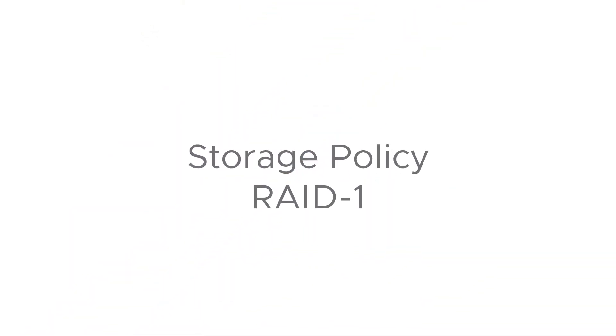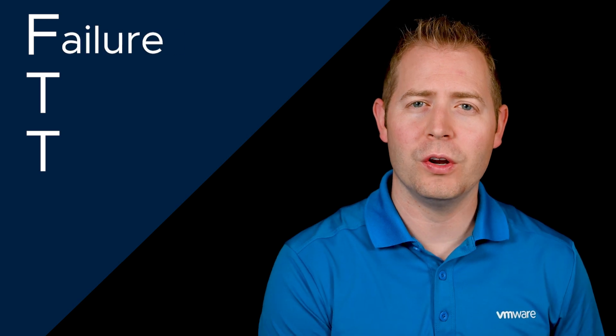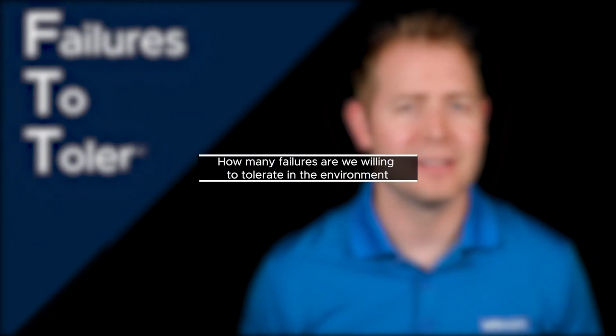Let's talk about our most commonly used storage policy, which is our RAID 1 policy. Our RAID 1 policy can support anywhere from one failure all the way up to three failures in the environment. We abbreviate that as FTT — our failures to tolerate. How many failures are we willing to tolerate? As we start increasing our FTT, there are hardware considerations and storage considerations that come along with it.